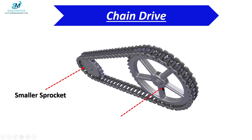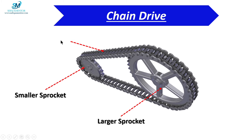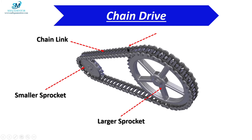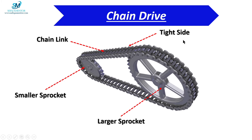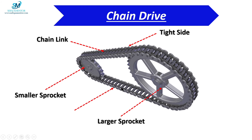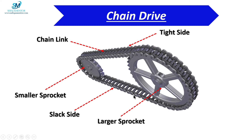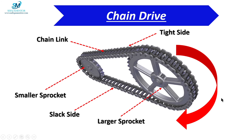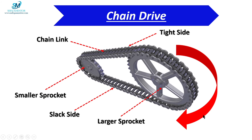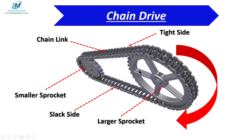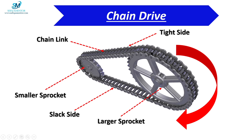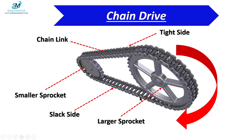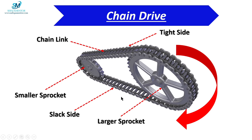Let's go forward and see the chain drive in detail. This is the smaller sprocket, this is the larger sprocket, and this is a chain link. The upper portion is known as the tight side and the lower portion of the chain is the slack side when the direction of rotation is clockwise. If we alter the direction of rotation to counterclockwise, then the top side becomes the slack side and the bottom side becomes the tight side.